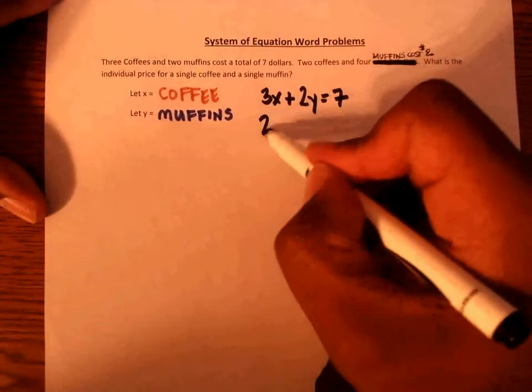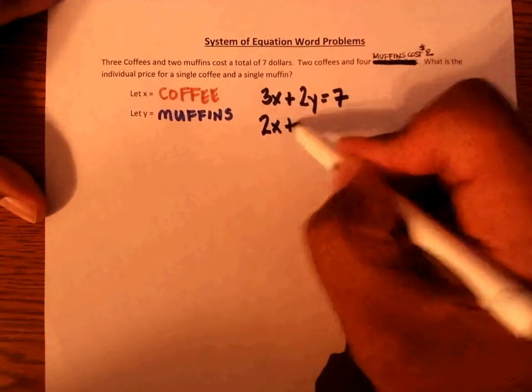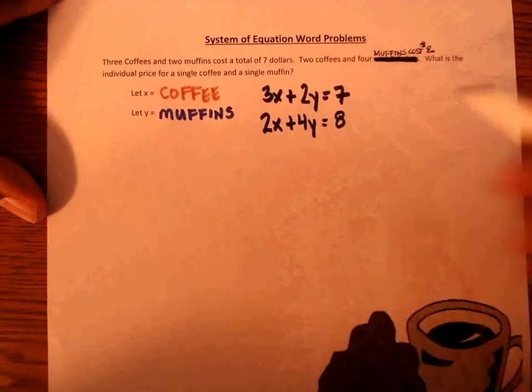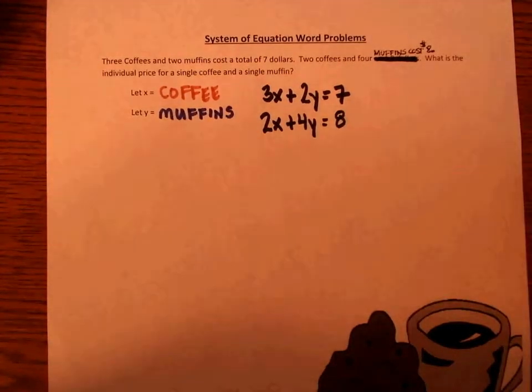Two coffees, 2X, plus four muffins will equal eight dollars. What is the individual price for a single coffee?